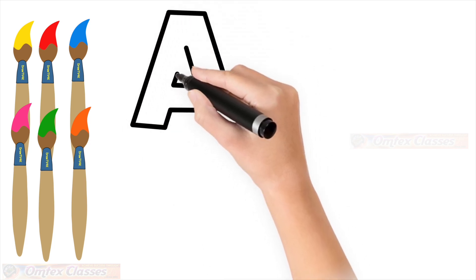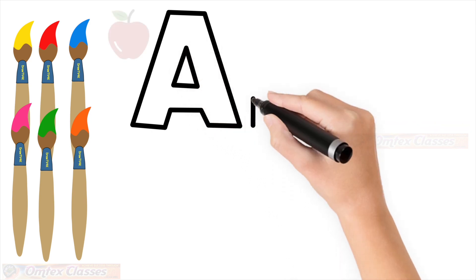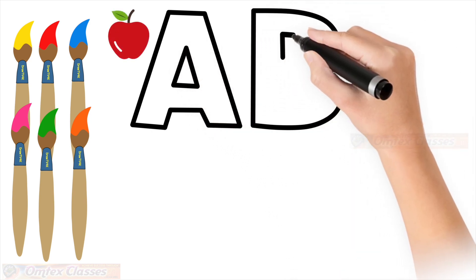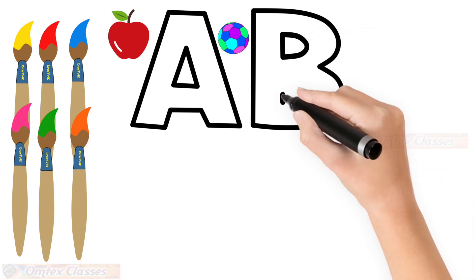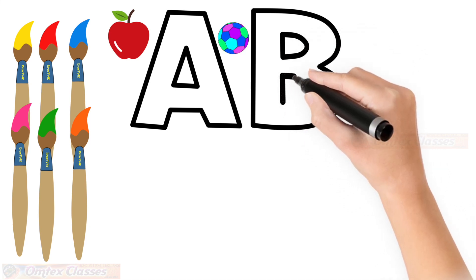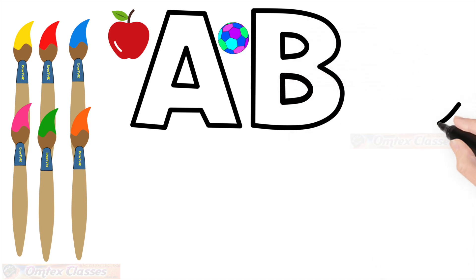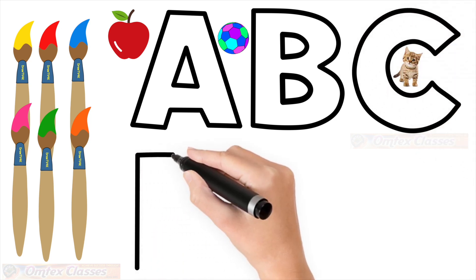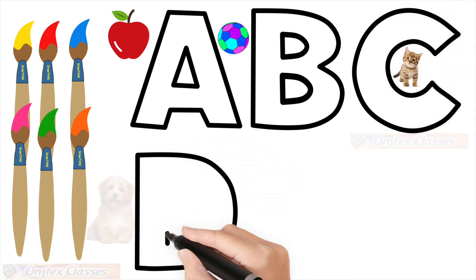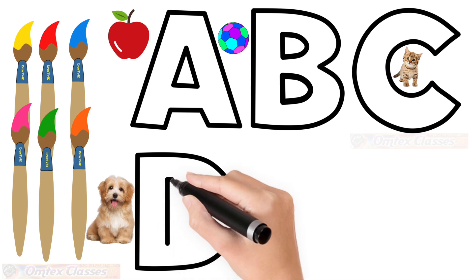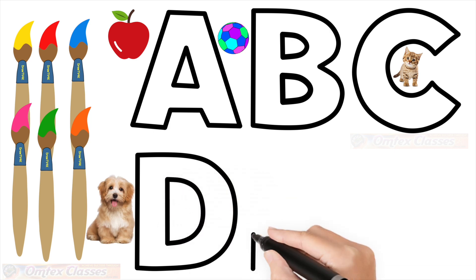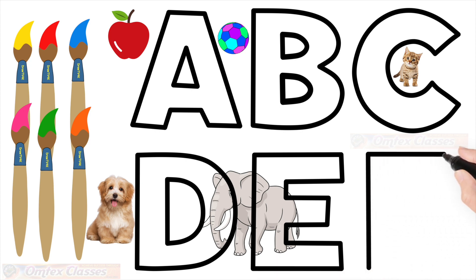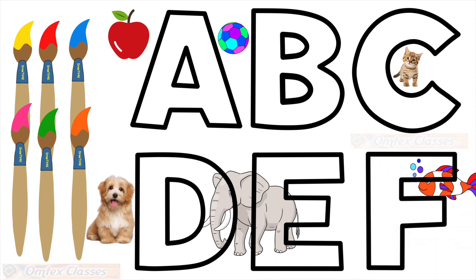A for Happy. B for Ball. C for Cat. D for Dog. E for Elephant. F for Fish.